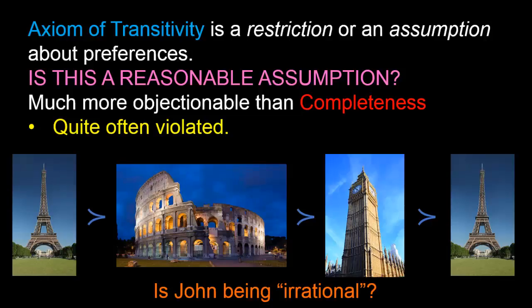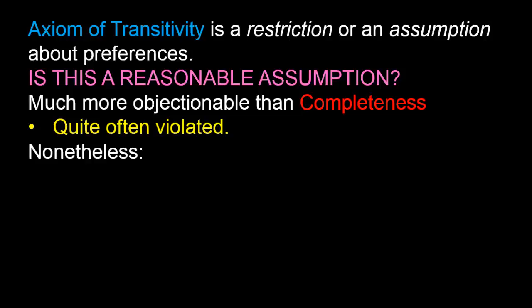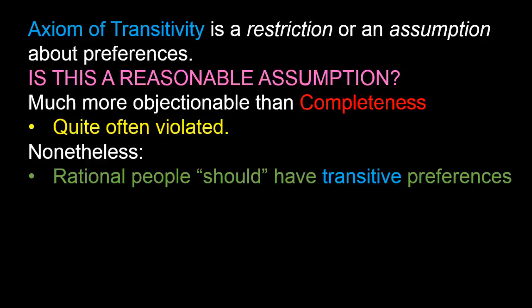Should we conclude that John was being irrational? Maybe if confronted with his choices, he'll get embarrassed and change his mind — perhaps now saying he'd rather go to Paris than to London. But then again, maybe not. Maybe he'll give perfectly good reasons for each choice. Nonetheless, we will always assume that everyone's preference is transitive. There are two reasons for this: economists believe rational people should have transitive preferences, and making this assumption makes our analysis of how people make choices much simpler.